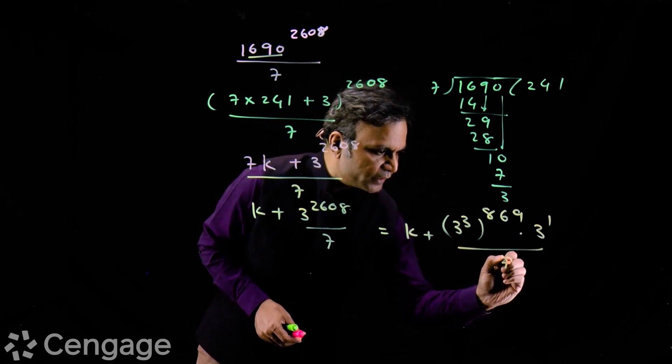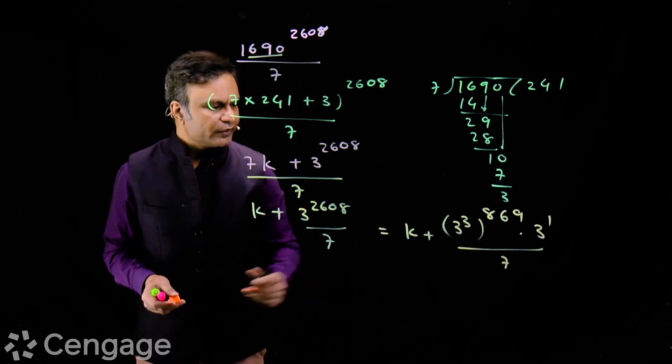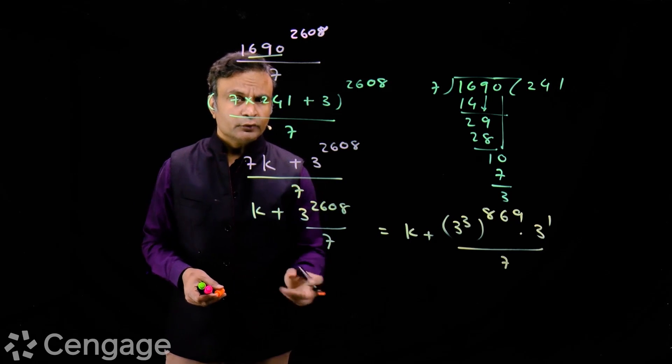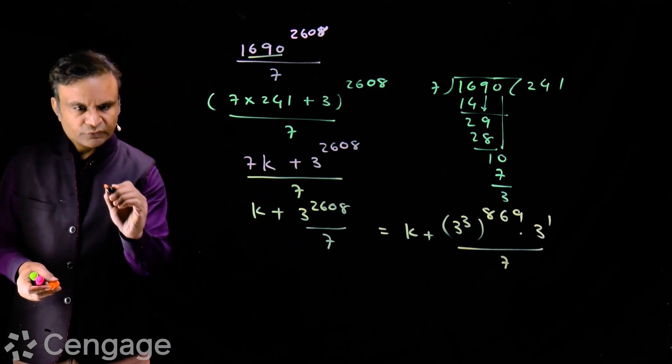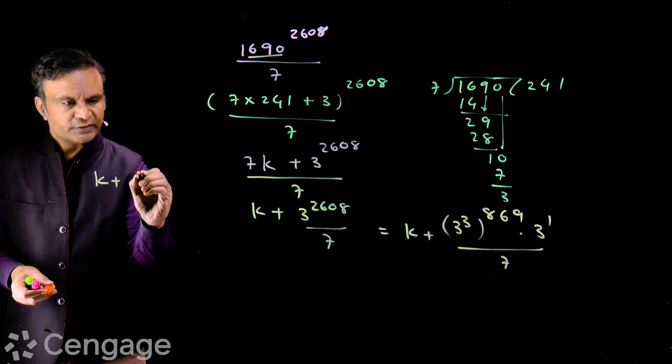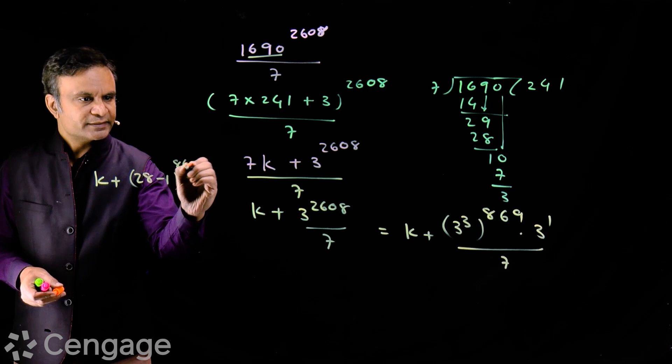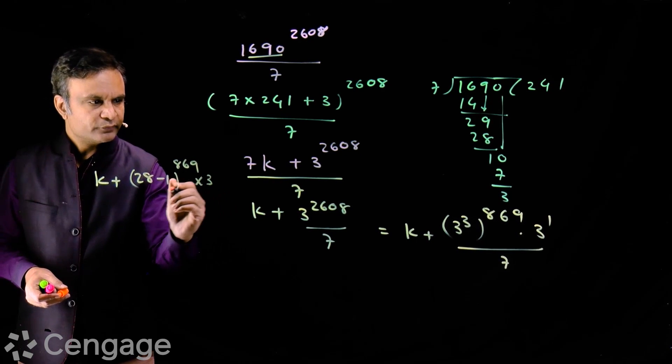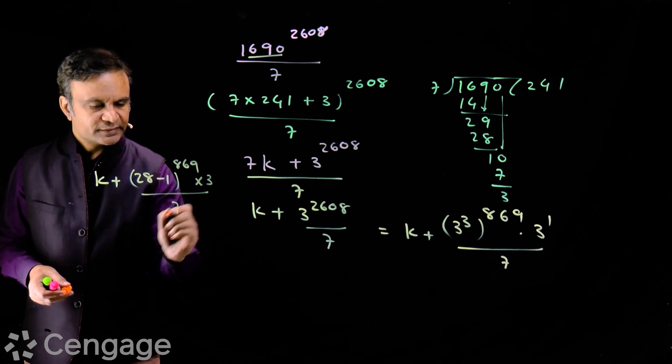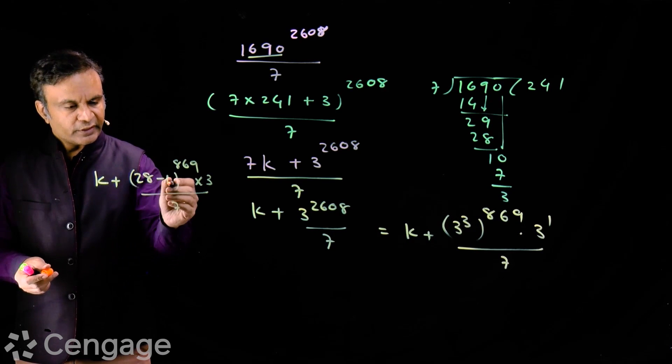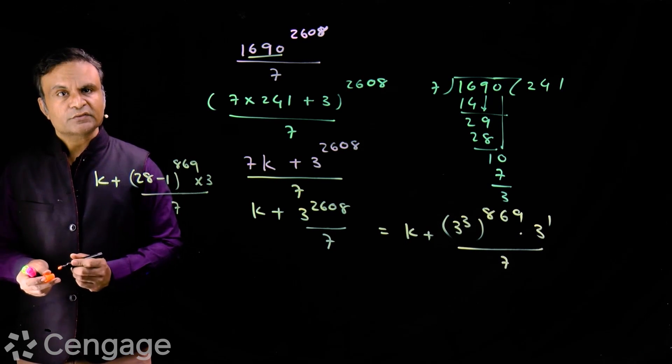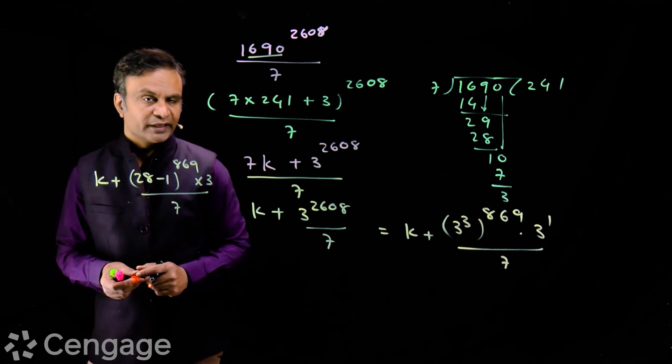So we have this divided by 7. Now we write 3 cube as 28 minus 1. So we have now k plus 28 minus 1 power 869 multiplied by 3 divided by 7.